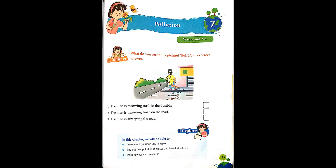Look at this picture. What do you see in the picture? Click the correct answer. The man is throwing trash in the dustbin. The man is throwing trash on the roads. The man is sweeping the roads. Which one is the correct answer here? Yes, the man is sweeping the roads.